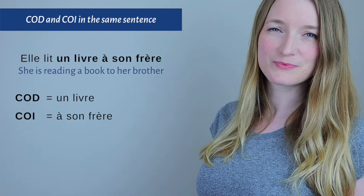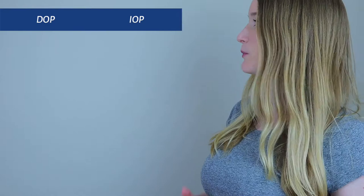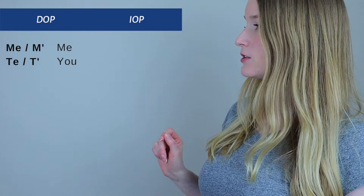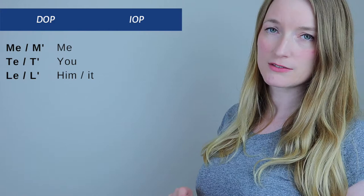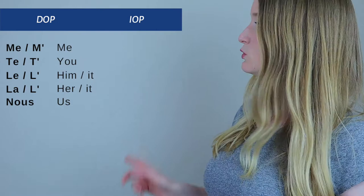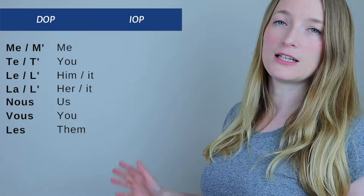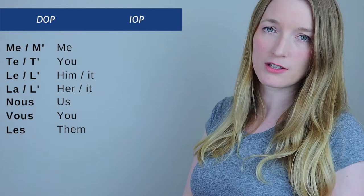Now let's review very quickly the DOP and the IOP. I would recommend you to take notes because I'm not going to keep all the information on the screen, or you can go to my website and download the PDF related to this lesson — it's free. So for the DOP, the direct object pronoun, we have: me, m', te, t', le, l', la, l', nous, vous, and les. If you don't know about this, it was in the two last videos, so maybe go back and watch those first.